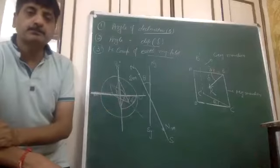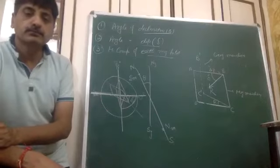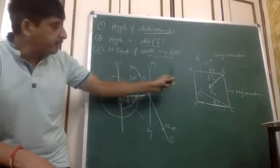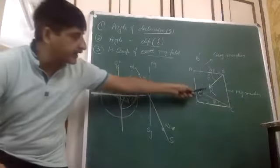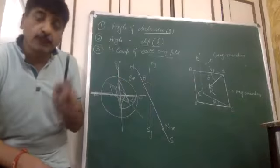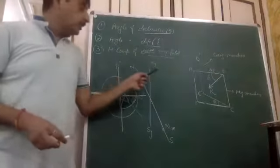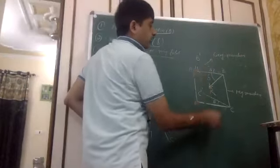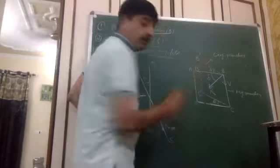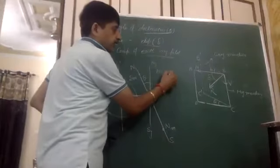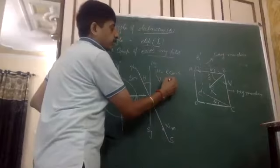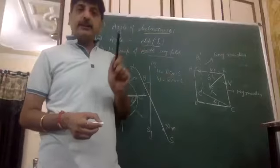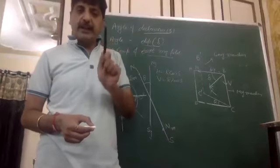Do you understand that? Yes sir. I will give the resultant value of the Earth's magnetic field. I will tell you all about the topic again. I will make the horizontal component and the vertical component of the Earth's magnetic field — R cos delta and the vertical component R sin delta. And these two components are in the magnetic meridian.